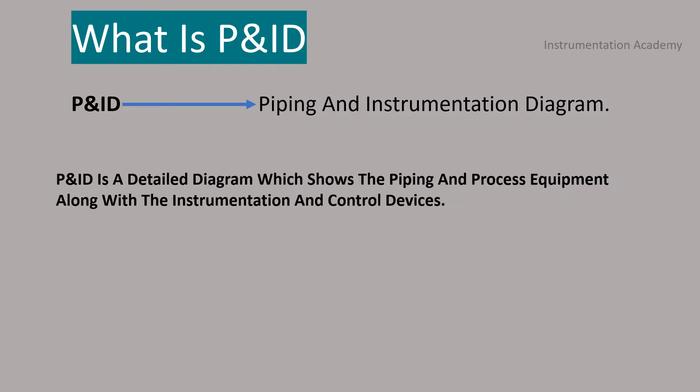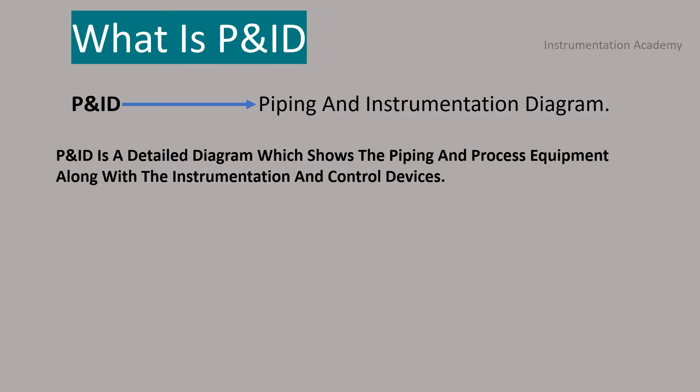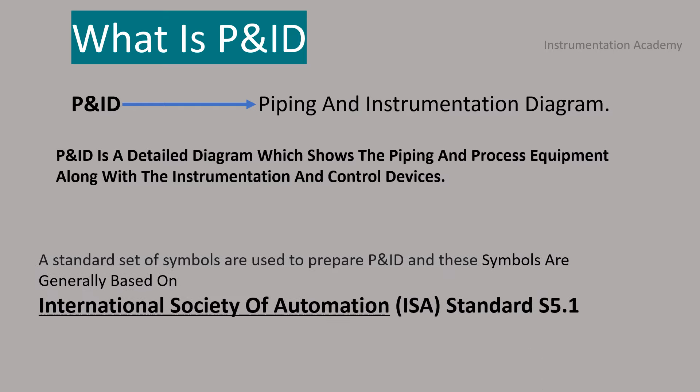A Piping and Instrumentation Diagram is a detailed diagram which shows the piping and process equipment with the instrumentation and control devices. A standard set of symbols is used to prepare P&ID and these symbols are based on International Society of Automation.